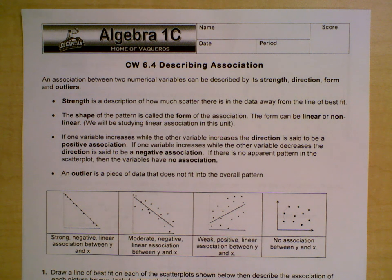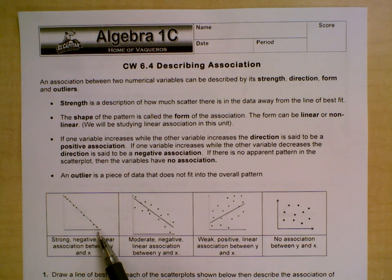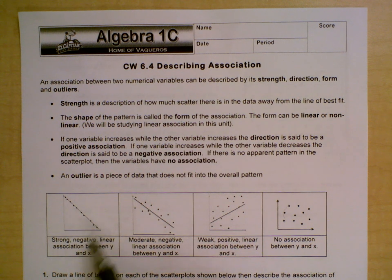The first one is strength. Strength is a description of how much scatter there is in the data away from the line of best fit. So if you look at our examples down below here, this one has a strong strength because almost every point is exactly right on the line of best fit and it fits that data really strongly.